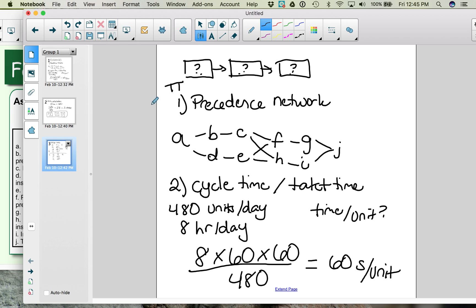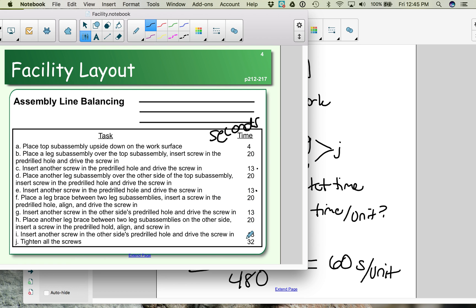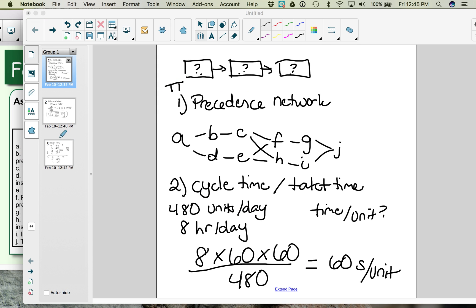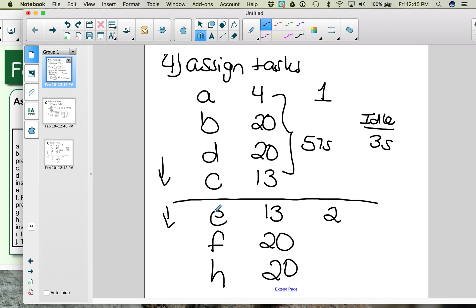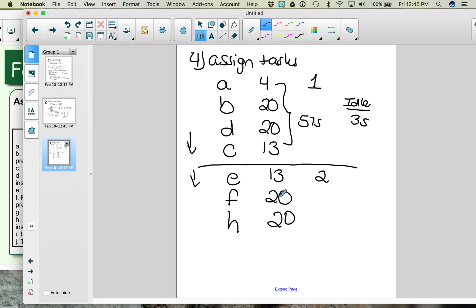We now go here at our precedence network, and we need to add G or I. So let's look at G and I. G takes 13, I takes 13. And if we look at how much we have left in workstation 2, we'll notice that neither one of them will fit at workstation 2. We don't have an additional 13 seconds to spare. So we total these up. We have 53 seconds here, which means we have 7 seconds of idle time.